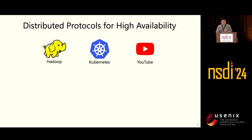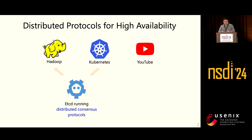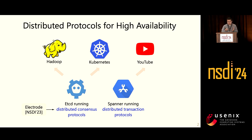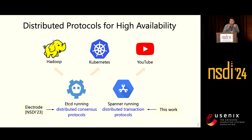The background is that data center applications normally rely on distributed protocols for high availability. For example, in Hadoop and Kubernetes, you typically run distributed consensus protocols to store cluster configurations, states, or metadata. And the popular YouTube application uses the Spanner database, which runs distributed transaction protocols to maintain critical user states. In previous work called Electra from OSDI 2023, we studied how to accelerate distributed consensus protocols, especially around fan-in communication patterns. This work, called DINT, looks at how to accelerate distributed transaction protocols, especially their data management.